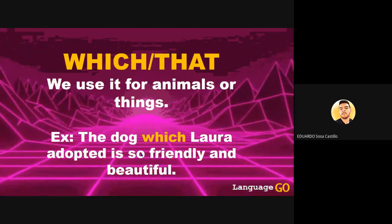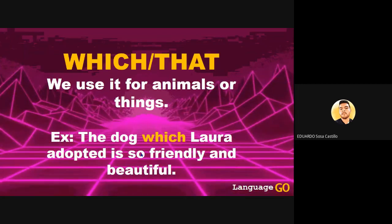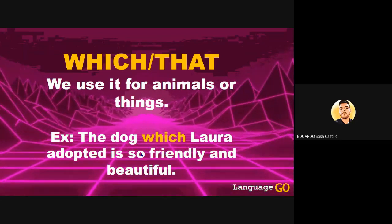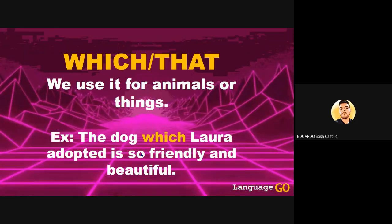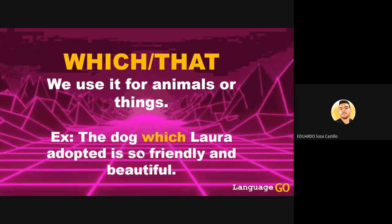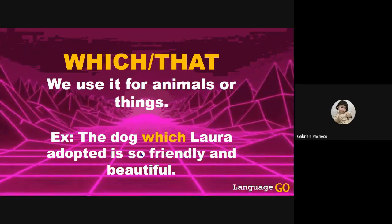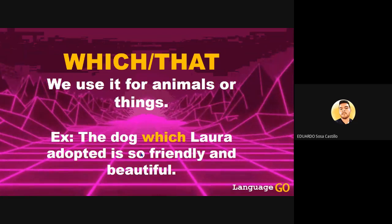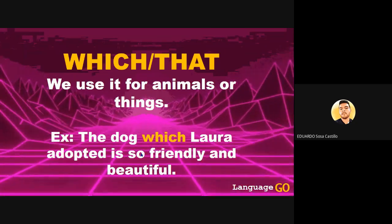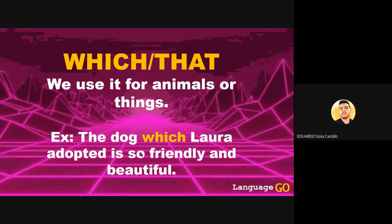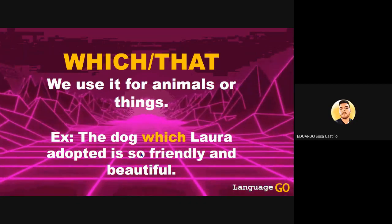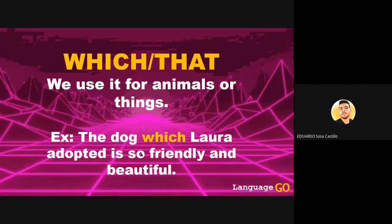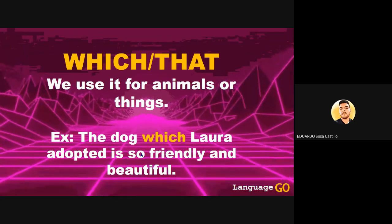'Which' and 'that' are used for animals or things. The example is: 'The dog which Laura adopted is so friendly and beautiful.' In this sentence, the subject is 'a dog.' Since we are talking about a dog, we use 'which' or 'that' because it's the form we use for an animal or a thing.